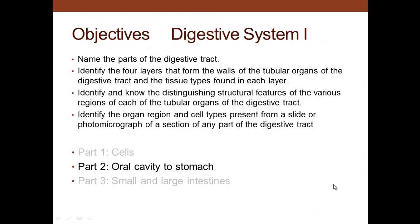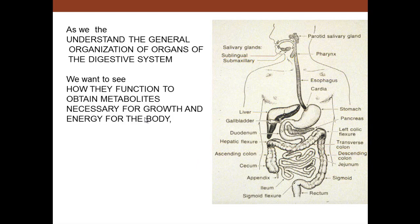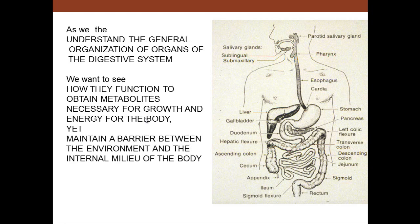In digestive system one, part two — oral cavity to the stomach — we want to look at epithelium and the makeup of the organs from the oral cavity through the esophagus and into the stomach. We want to understand the general organization of organs of the digestive system and see how they function to obtain nutrients necessary for growth and energy, while maintaining a barrier between the environment and the internal milieu of the body.